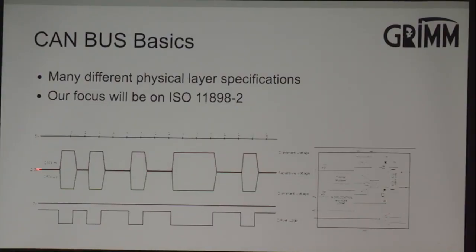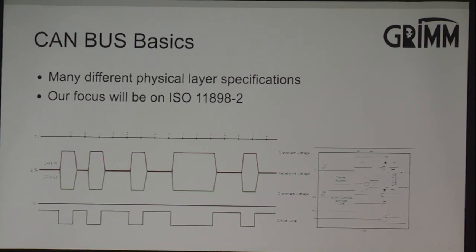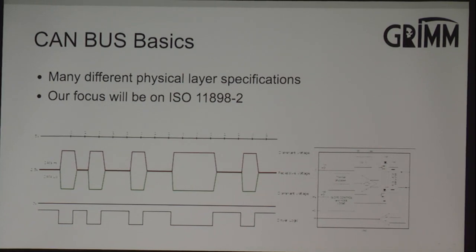On this slide, we've got a graph of voltage versus time for a CAN message. You have two lines: CAN high and CAN low. In the recessive state — the idle state on the bus — both of those lines will be floating around two and a half volts. When a transmitter wants to send a dominant bit, it pulls the CAN high line to about 3.3 volts and the CAN low line to about one volt, so you get a significant swing in voltage levels.